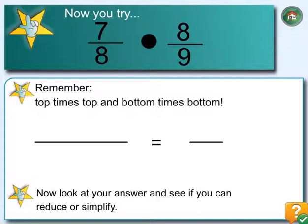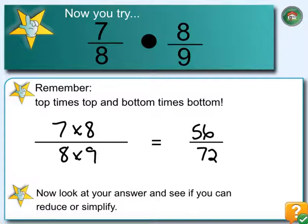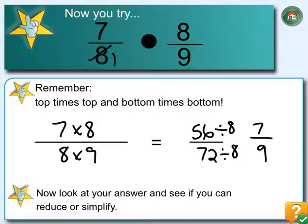To show this again, we have 7 eighths times 8 ninths, so we get 56 over 72. Those are each divisible by 8, so we get 7 over 9. Since we're multiplying fractions, we can cross-simplify: 8 into 8 is 1, and 8 into 8 is 1. We just get 7 times 1 over 1 times 9, which is 7 ninths. So whether you reduce before or reduce after, it'll work.